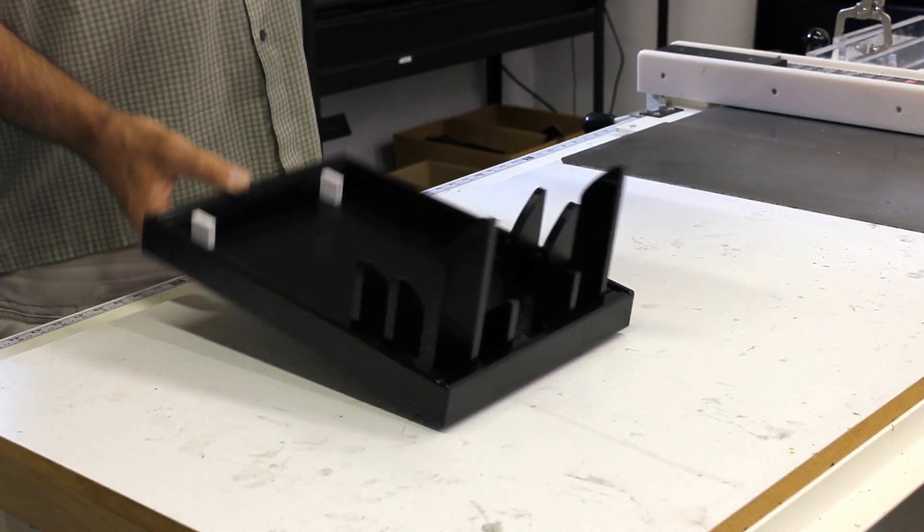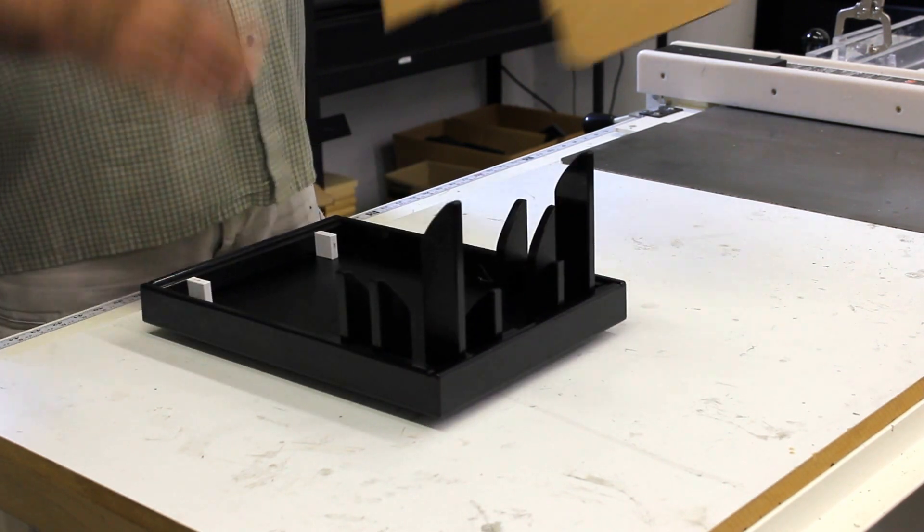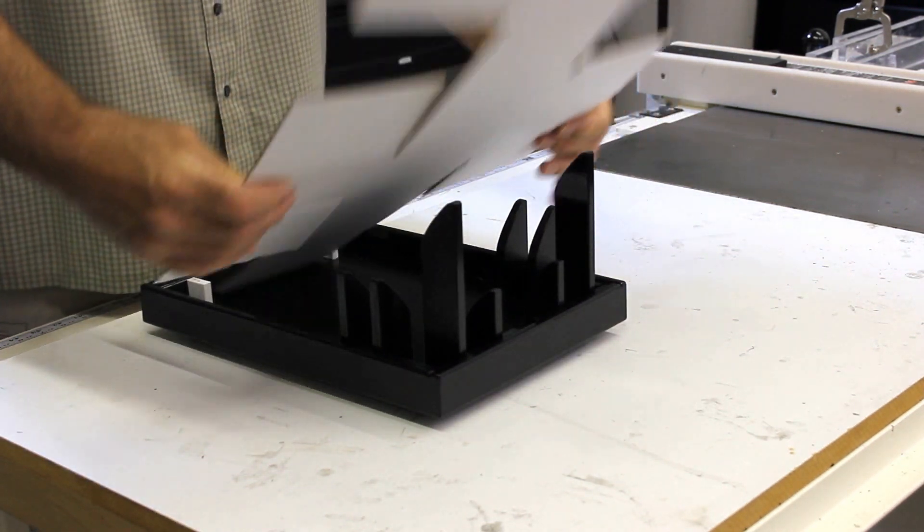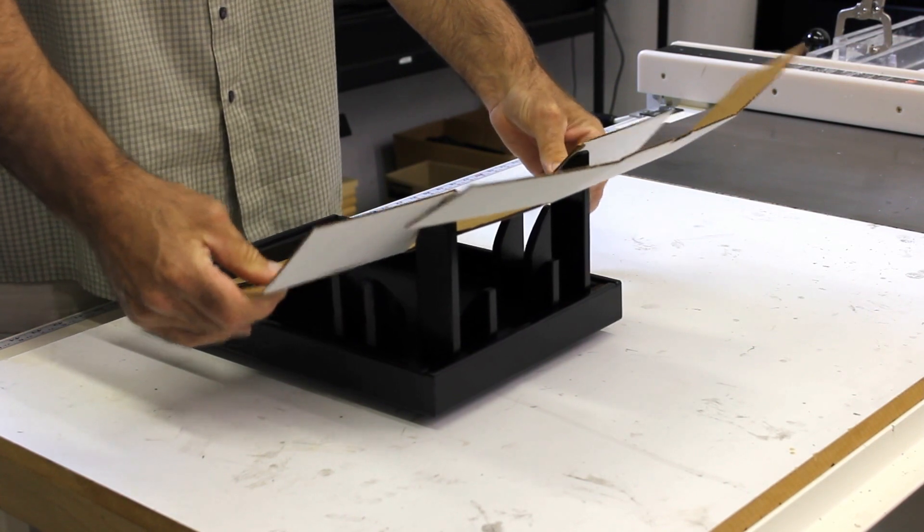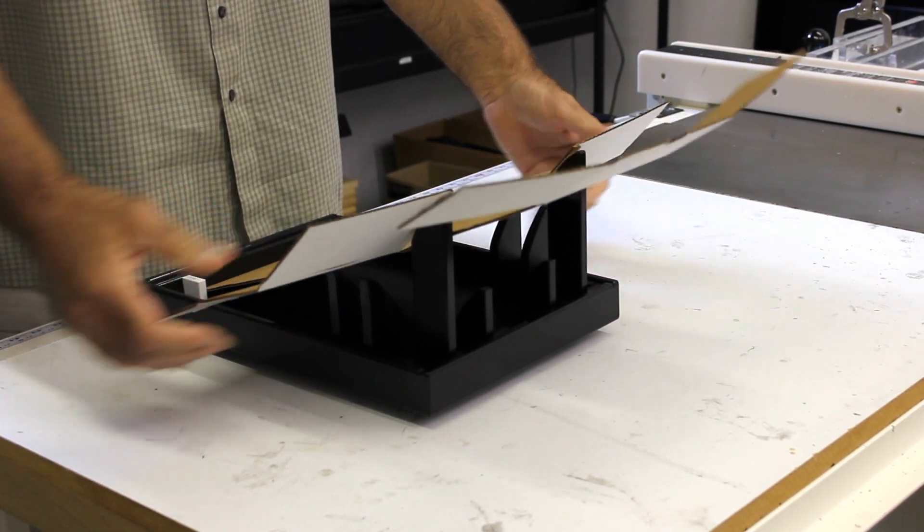We're going to set the front of the box into our visual guides and then we're going to firmly press down to set the rest of the box.